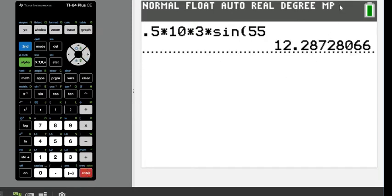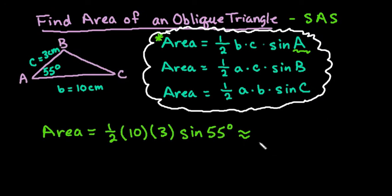Hit enter and we get 12.287, which rounds to 12.29. So the area for this triangle is approximately 12.29 centimeters squared.